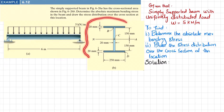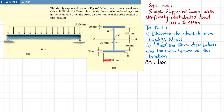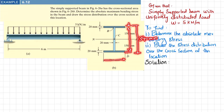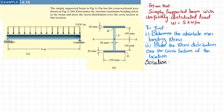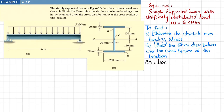The cross section of the beam is shown here. You can see all the dimensions: the width is 250 mm, and the total height is 300 + 20 + 20 = 340 mm. The thickness of the web is 20 mm and the thickness of the flange is 20 mm. We need to determine the absolute maximum bending stress and draw the stress distribution over the cross section.